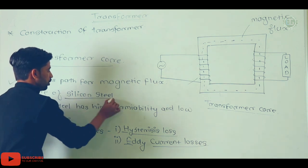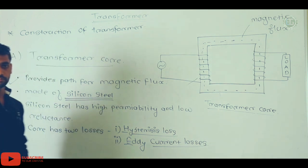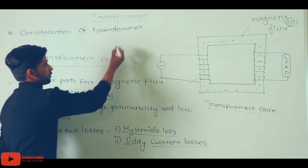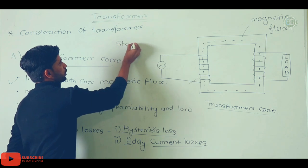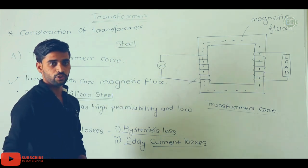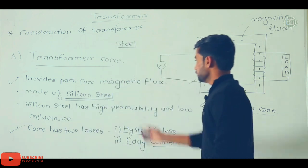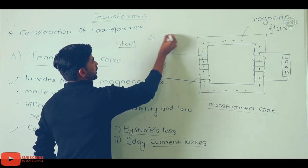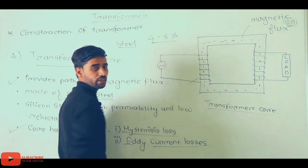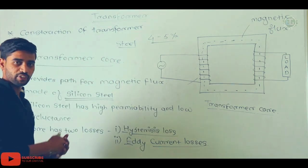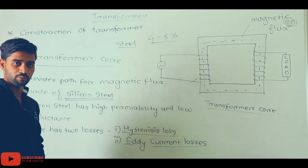The transformer core is made of silicon steel material. To reduce eddy current loss, 4 to 5 percent silicon is added to the core, so that electrical conductivity is reduced and the eddy current loss is decreased.